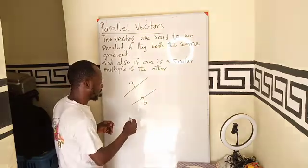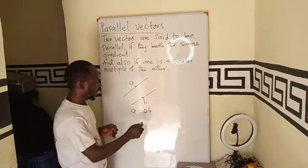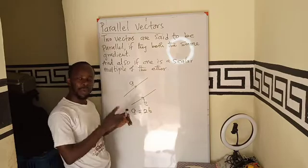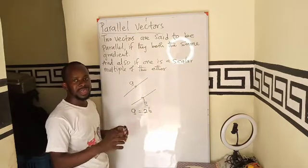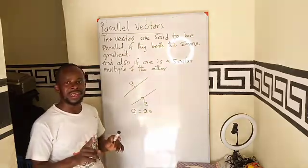So if I have A is equal to two times vector B, that means that the two as a scalar, which is a positive number, multiplying B, makes the two vectors moving in the same direction.